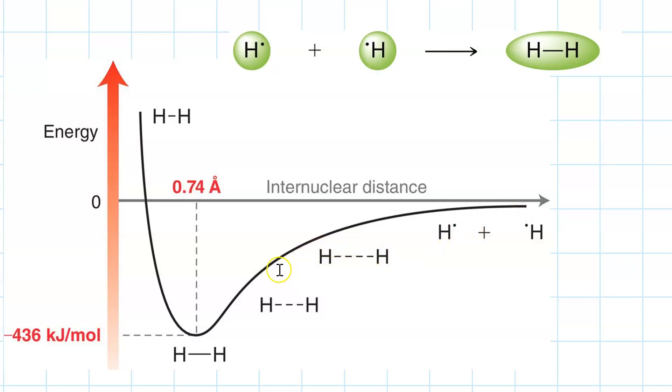And that attraction grows and grows and grows and grows as you bring the nucleus of one atom closer to the electron of the other. But then look what happens here. The potential energy starts rocketing up if you get the nuclei too close. That rapid increase is because of internuclear repulsion.